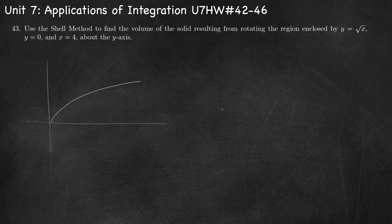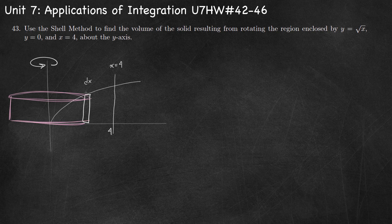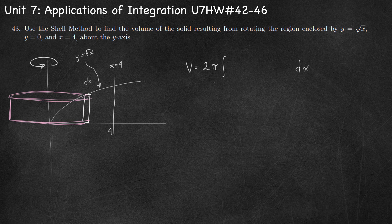For number 43, our region is formed by y equals square root of x, y equals 0, and x equals 4. Here's x equals 4. We're going to rotate this around the y-axis. Using the shell method, we draw our reference rectangle parallel to the axis, making this a dx problem. Our function is y equals square root of x. Since it's a dx problem, we want the equation in the form y equals some function of x. Our volume equation will be 2 pi times the integral, going from x equals 0 to x equals 4.